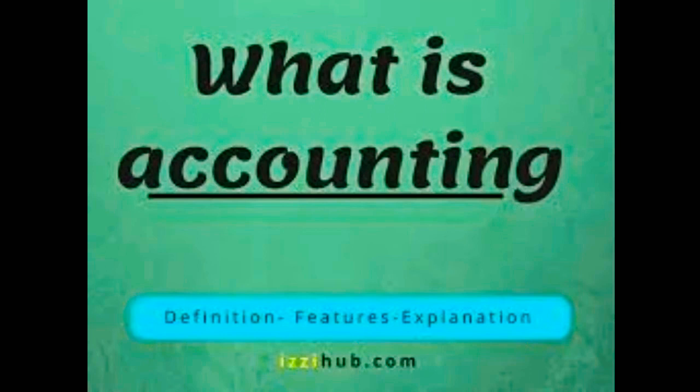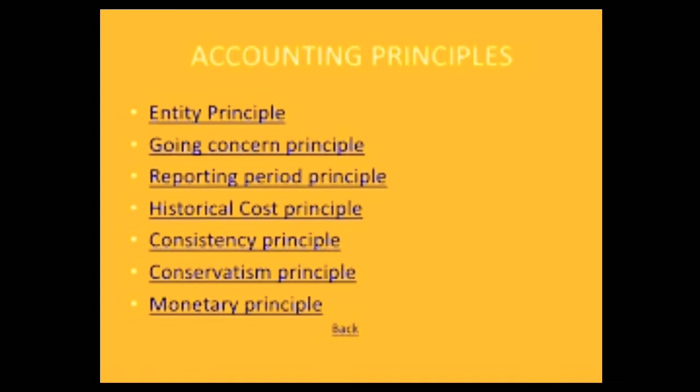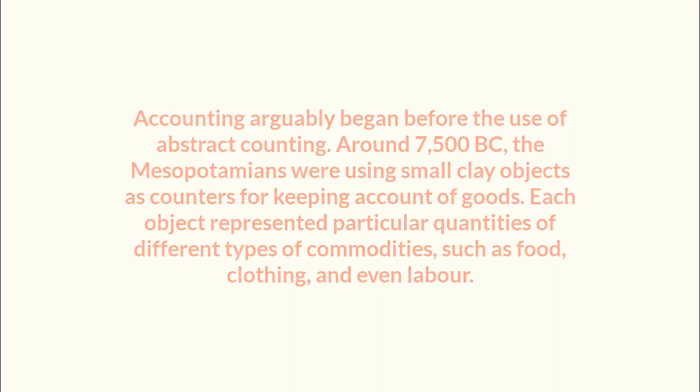Now we can start from the first question: what is accounting? Actually, accounting is a systematical method of applying some principles and rules in a transaction. The actual application of accounting was started from the ancients — our ancestors also used accounting methods in their real life. Accounting was there from the modern age, but it was in an unsystematical order.